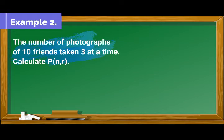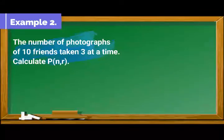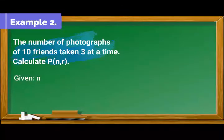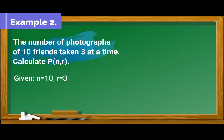Example number 2: The number of photographs of 10 friends taken 3 at a time. Calculate the permutation of n taken r. In this problem, our given is n equal to 10 and r is equal to 3.